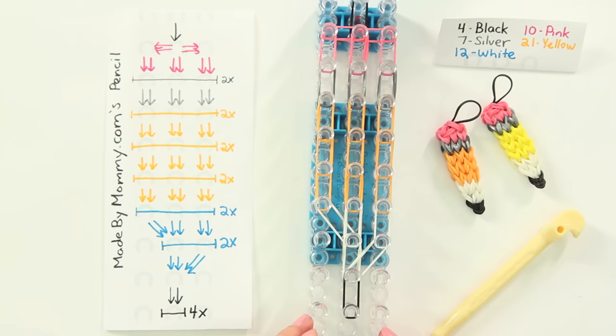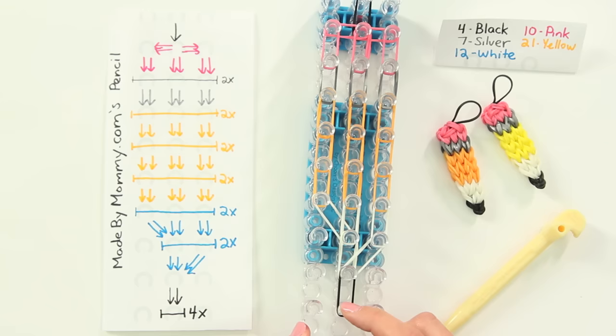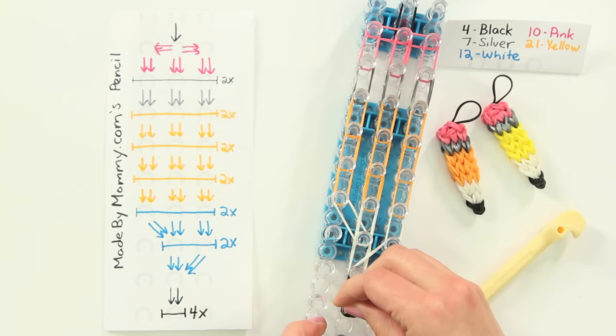The first one, starting from the bottom, is a single black rubber band wrapped around this one peg four times. One, two, three, four.